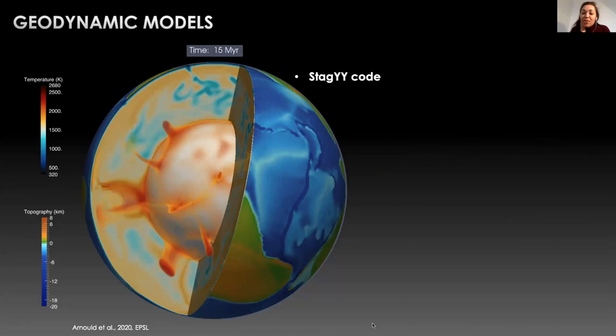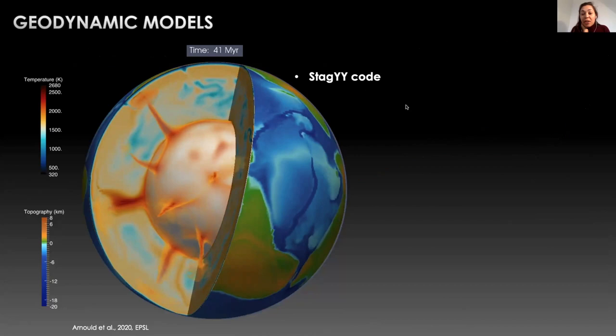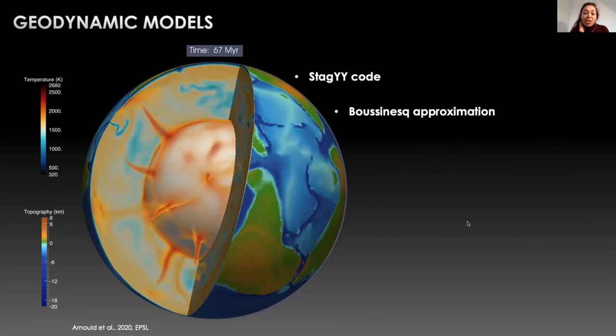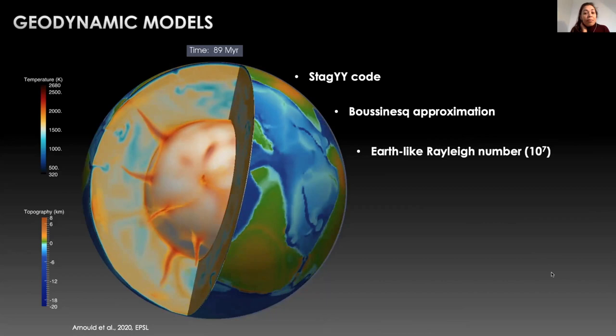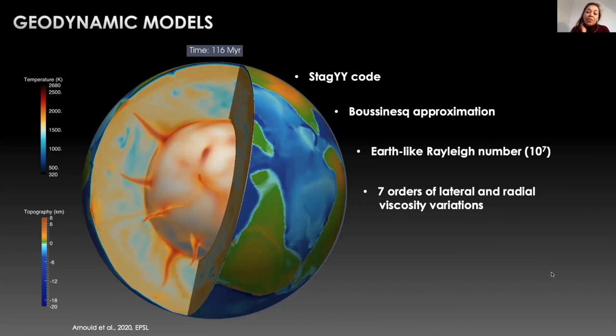To do so we use a numerical model of whole mantle convection such as this one, which was modeled using the StagYY code developed at Zurich. We used incompressible mantle convection using the Boussinesq approximation, an earth-like Rayleigh number of 10 to the 7, a viscosity law allowing seven orders of lateral and radial viscosity variations throughout the domain.